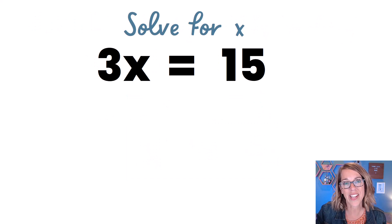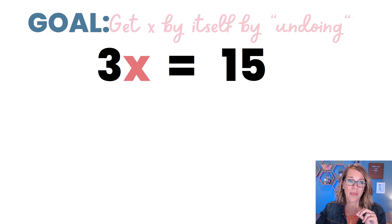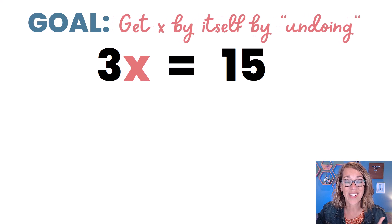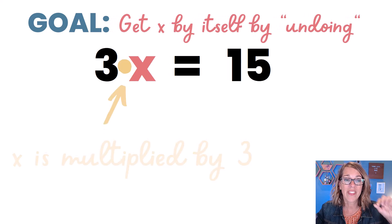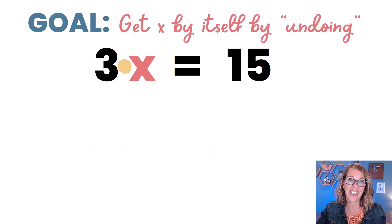In this next one, I've got 3 times x is equal to 15. Again, I'll bet that you can guess at what this answer is. Now for this one, our goal is again getting x by itself by undoing. But this time, we're going to undo this 3 that got multiplied by the x. To undo a multiplication, we're going to need to divide.